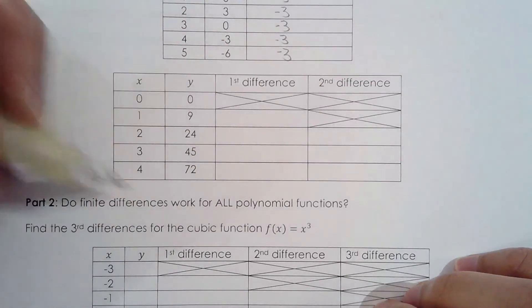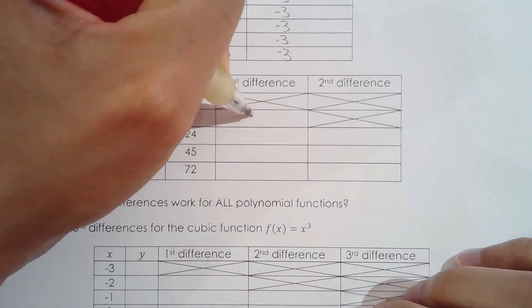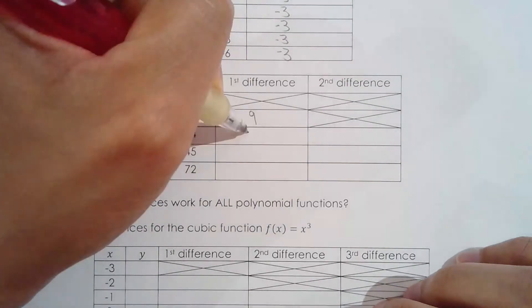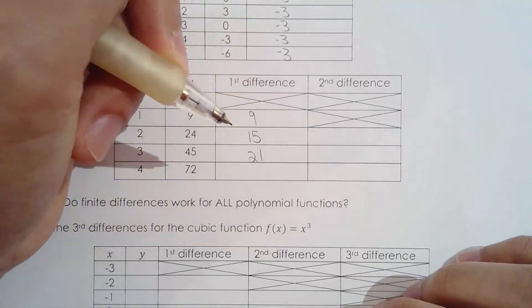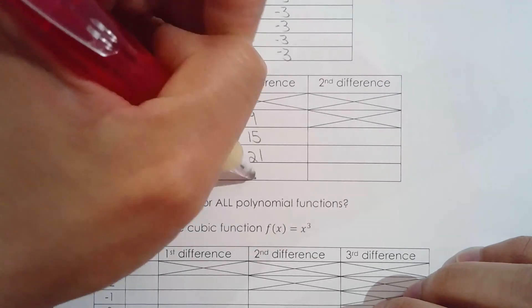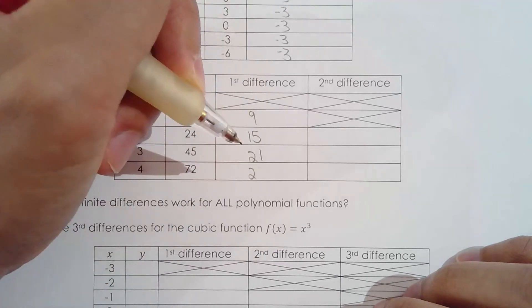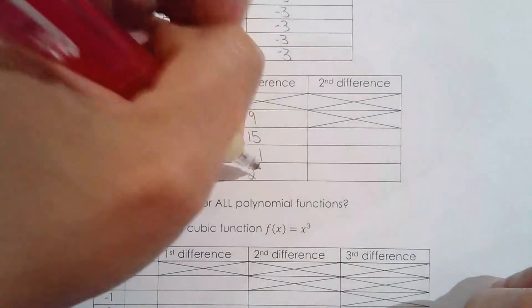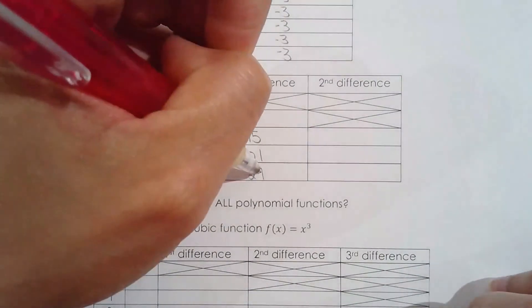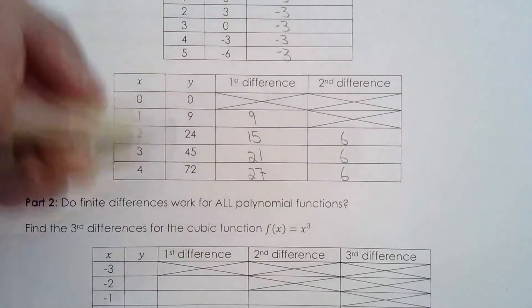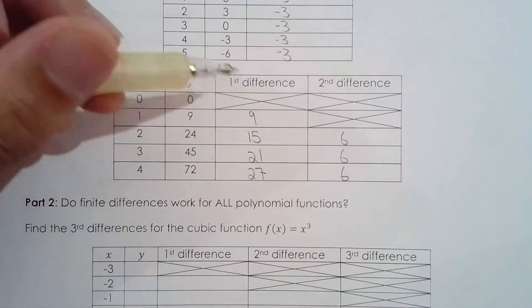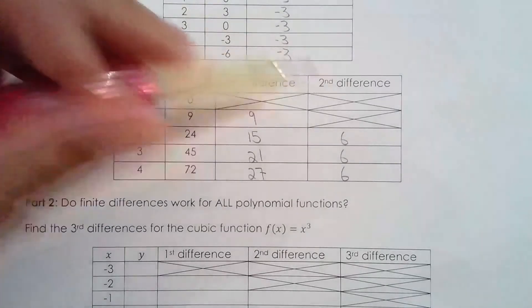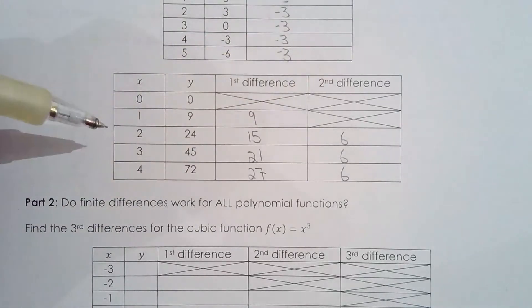Let's do this table here. 0 to 9 means an increase of 9, 9 to 24 is an increase of 15, then 21, 27, and then 6, 6, 6, beautiful. This is not a linear relationship being displayed because the second differences are constant. We're going to say that this is a quadratic relationship.